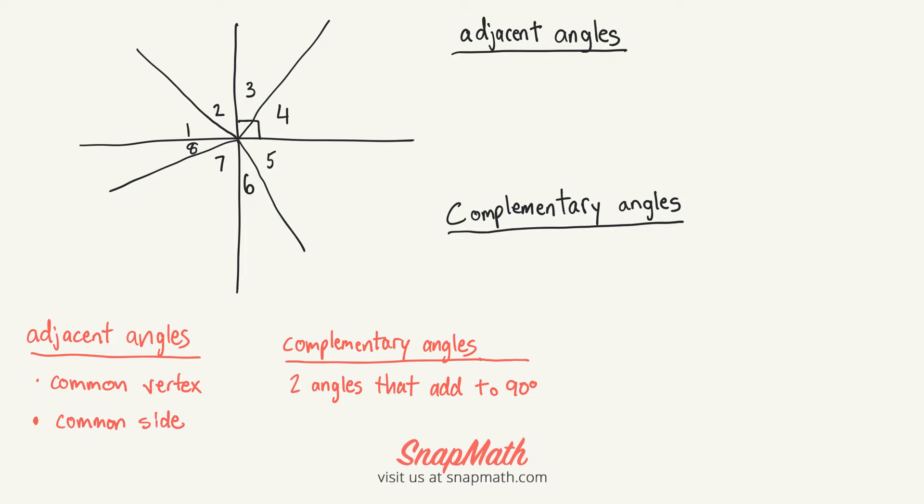So the first thing is I wrote the definition of each one in the bottom left here. The adjacent angles are two angles that have a common vertex and a common side, and the complementary angles are two angles that add up to 90 degrees.